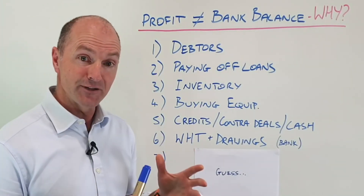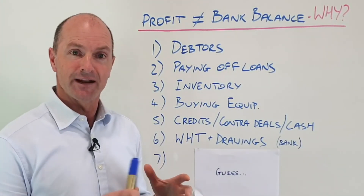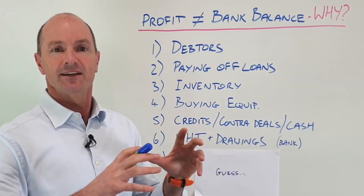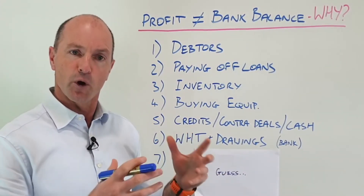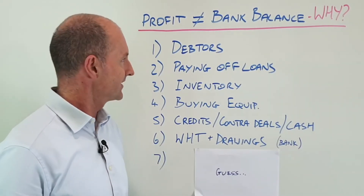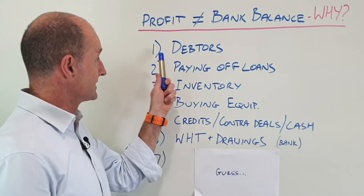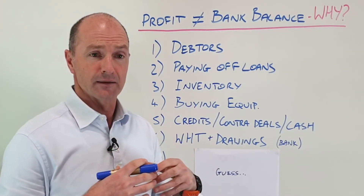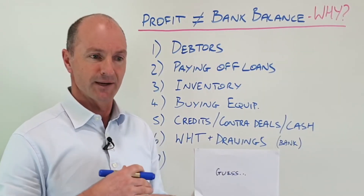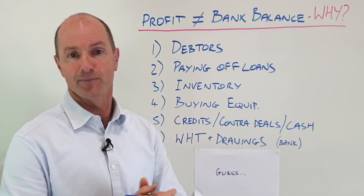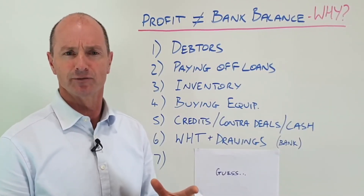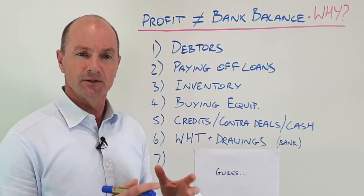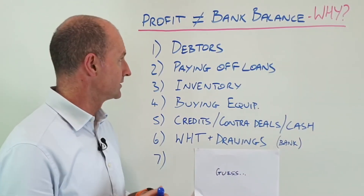It's largely an accounting issue and a timing issue. It's not that the money isn't there — you've just got to know where to look and why it could be appearing that way. The first one is debtors. You might have been doing a lot more work recently and have a lot more invoices out, and people haven't paid or you haven't chased them as hard as you should have. Your debtor list might just be larger, so that's the first place I'd always look.